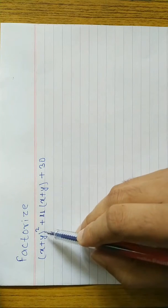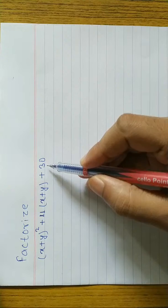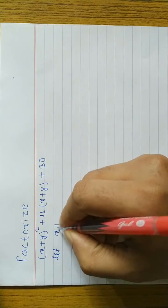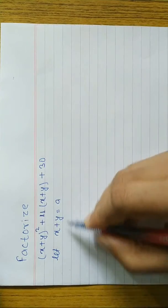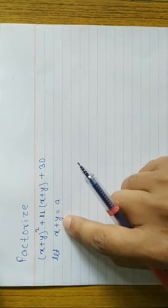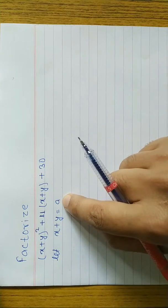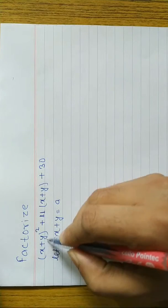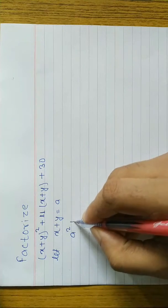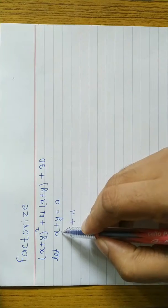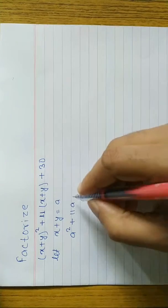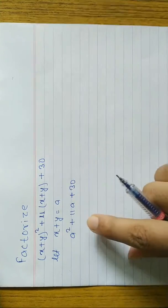Question one: (x + y)² + 11(x + y) + 30. We cannot factorize this directly. So first, we let x + y equal to a. In the place of (x + y)² we write a², and plus 11 times a, and plus 30. Now you can see this is in the form of a quadratic equation: a² + 11a + 30.